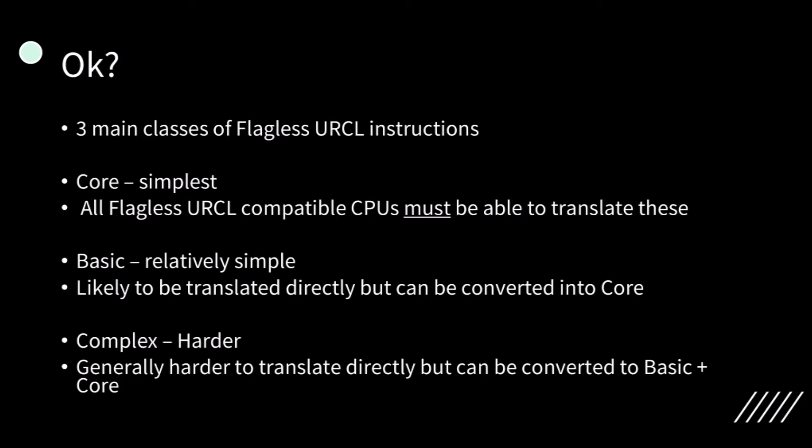There are three main classes of flagless URCL instructions: core instructions, basic instructions, and complex instructions. Core instructions are the simplest, and all flagless URCL compatible CPUs must be able to translate these. Basic instructions are relatively simple and are most likely to be translated directly, but if a CPU cannot translate them directly, they can be converted into core instructions. Complex instructions are harder instructions; generally more difficult to translate directly, but they can be converted into basic and core instructions.